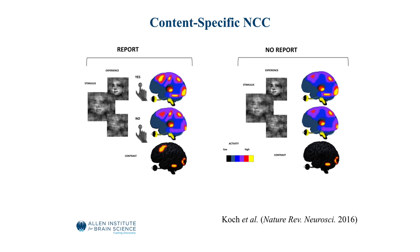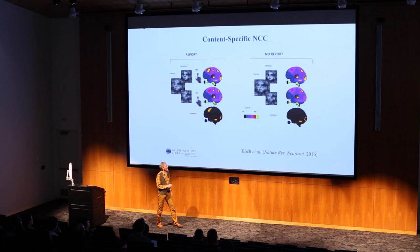There's selective visual attention that people now dissociate from consciousness, so you have to do at least a two-by-two design where you vary attention independently of consciousness. But then also there's a response pattern — you have to press the button, you have to keep the task in mind. So what people are now doing is moving to a no-report paradigm, for instance, where you randomly intermix report with non-report, or use a different experimental paradigm.